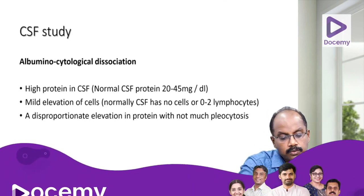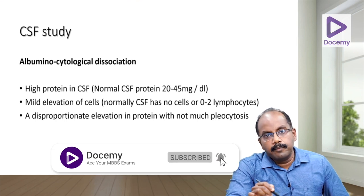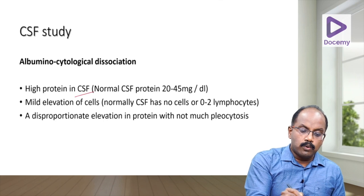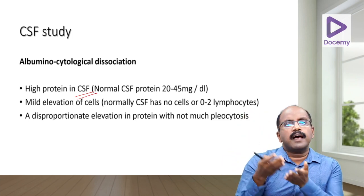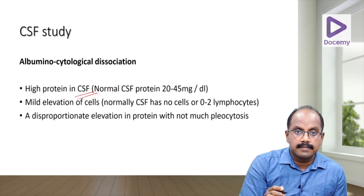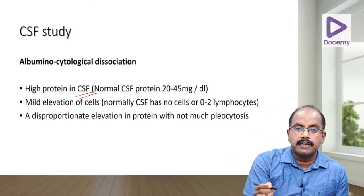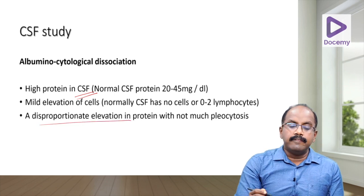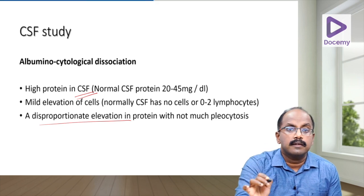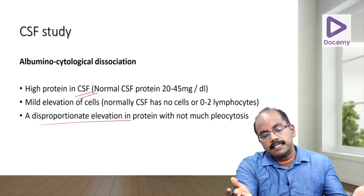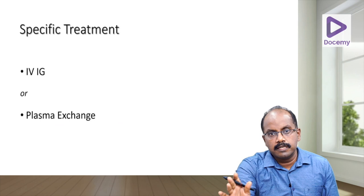The classical CSF finding in GBS is albuminocytological dissociation — a very important exam question. This means there is high protein in the CSF (normal: 20–45 mg/dL) without a corresponding rise in cells. The disproportionate elevation in protein without much cell increase is the hallmark of GBS. With nerve conduction study and CSF study, the diagnosis is confirmed.